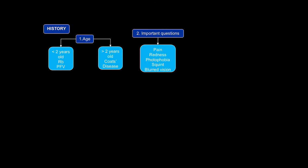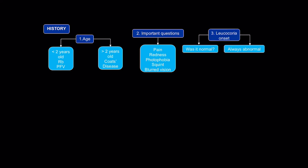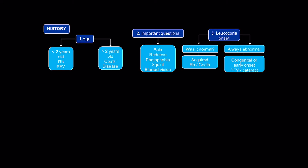Important questions to ask in the history: Has there been pain, redness, photophobia, a squint, or blurred vision? When did the leukocoria start — was the reflex normal at one point, or has it always been abnormal? If it was normal once, it could be an acquired cause like retinoblastoma or Coates disease. If it's always been abnormal, it's more likely a congenital or early onset cause like PFV or cataract.